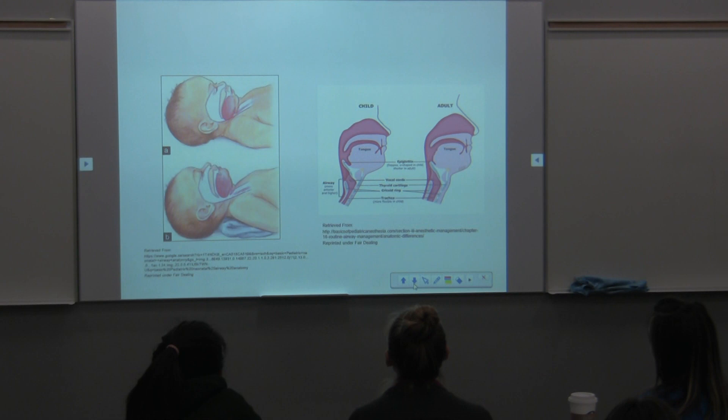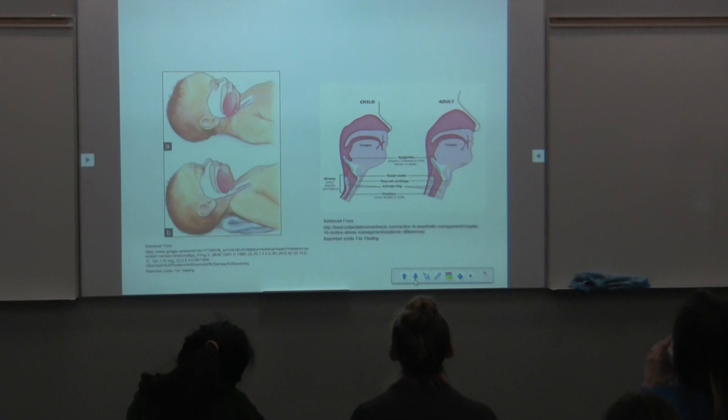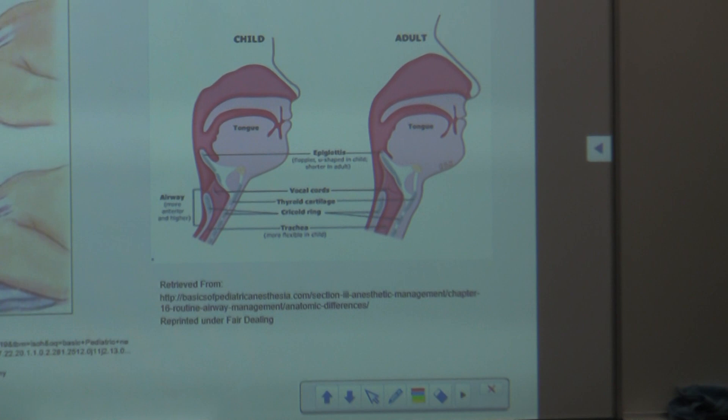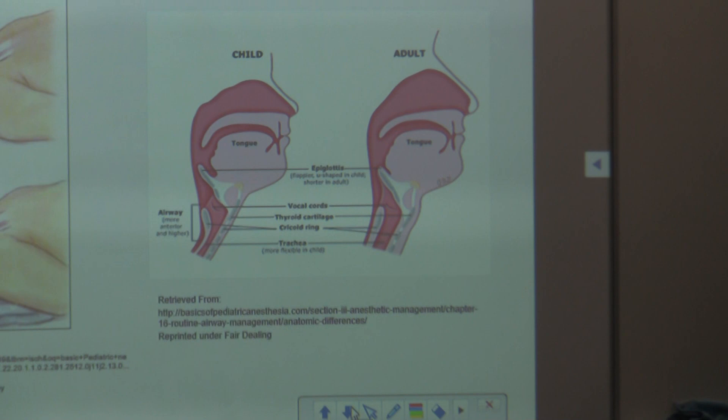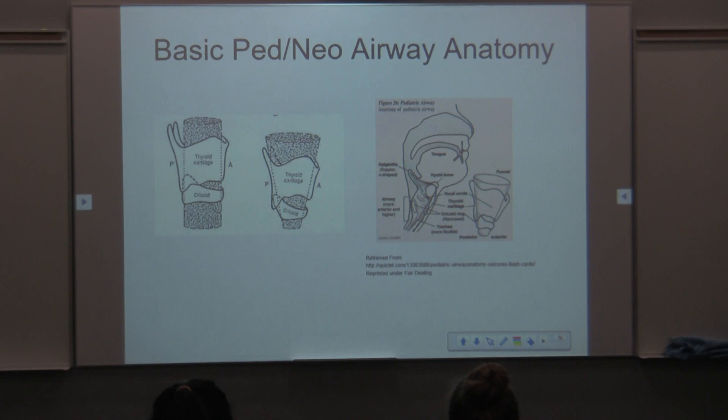The shoulder roll allows the occiput to drop and lines up the airway axes. You can also see how the child's airway versus the adult airway looks — the tongue is much larger, the space is just physically smaller, and the narrowing of the airway happens further down at the cricoid. The adult airway on the left shows a straighter structure.